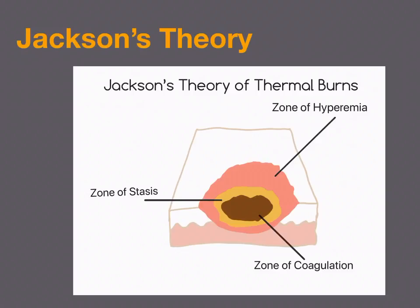Depending on how long and how hot the exposure was, we may see distinct burn zones — this is Jackson's theory of thermal burns. In the very center, where the most heat was transferred, is the zone of coagulation. Tissue here has typically died and will not heal. Surrounding that is the zone of stasis, which is damaged with some vasoconstriction but is potentially salvageable.